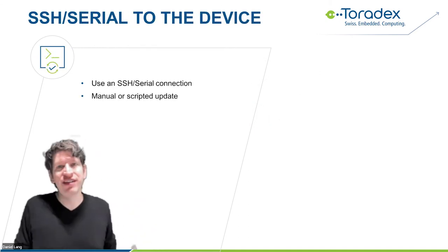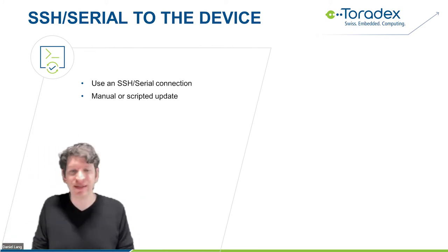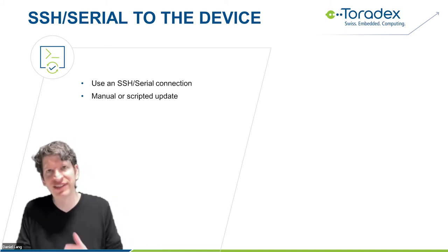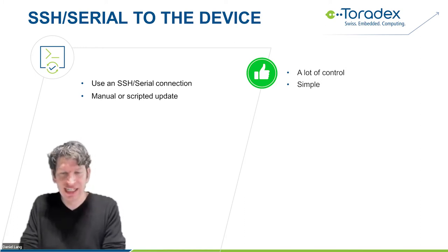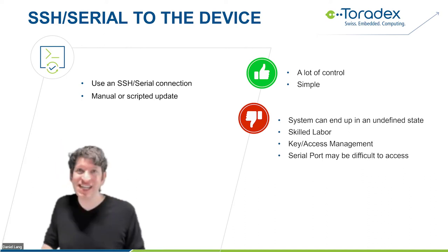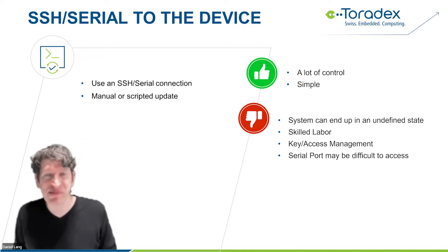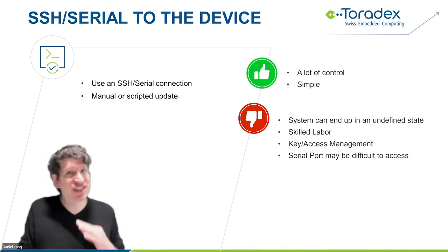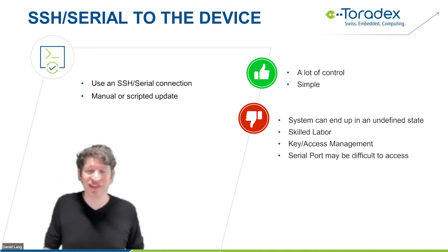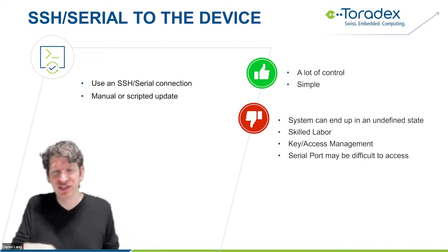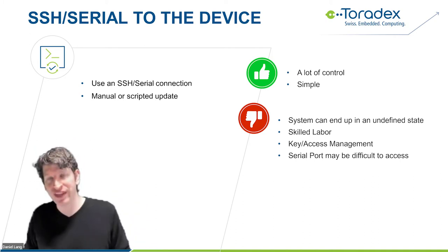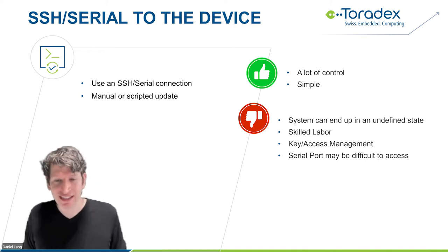Next is SSH or serial access, where you log into the device and do manually-scripted updates. We see this a lot in proofs of concept or when people have just a few devices. You have a lot of control and it's fairly simple. The disadvantages: the system can easily end up in an undefined state with many steps that can go wrong; it typically needs skilled labor — even engineers doing it; and you have to manage access accounts, secrets, and user permissions, which is often not done well.